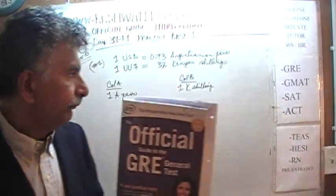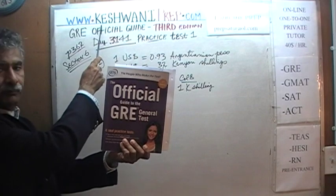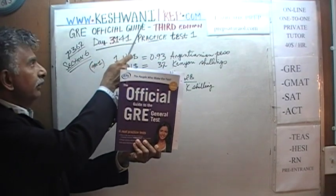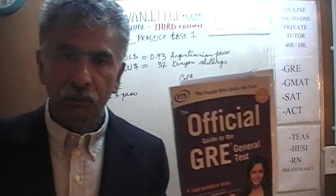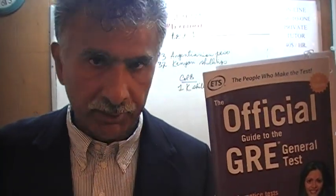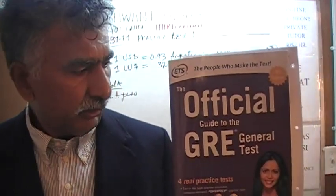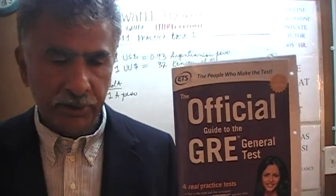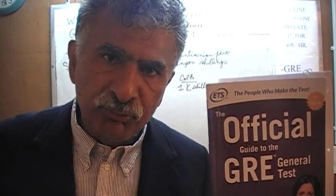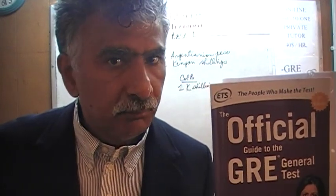Hello, my name is Keshwani, that is K-E-S-H-W-A-N-I. We are here because we want to prepare for the GRE. We have been solving math problems out of this book, the Official Guide to the GRE, the third edition. If you do not own this book already, purchase it immediately. You are going to need it.